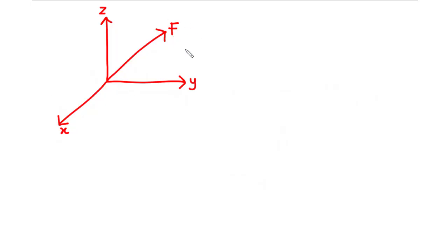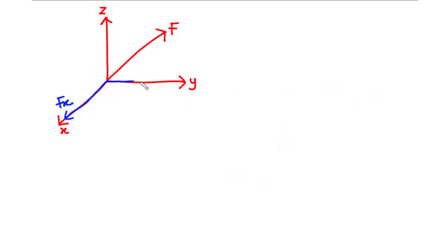Given a force vector F in a three-dimensional space — or in the x, y, z plane — we have the x-axis, the y-axis, and the z-axis. This force vector may have rectangular components along the x-axis, along the y-axis, and along the z-axis, depending on the orientation of the vector relative to all three axes. The rectangular component along the x-axis is called Fx, that along the y-axis is called Fy, and the one along the z-axis is called Fz.